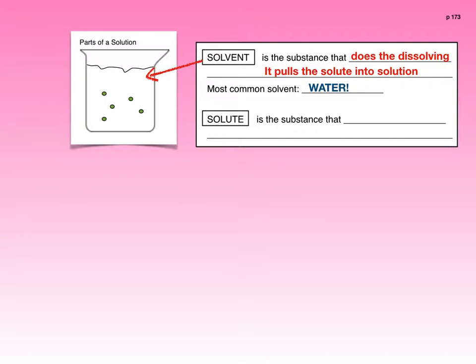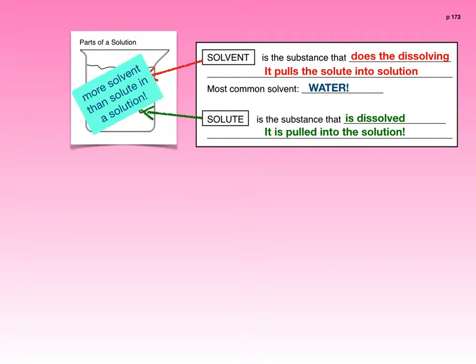What the solvent like water pulls into the solution, we refer to as the solute. So the solute is the substance that is dissolved. The solute is pulled into the solution. If you take a look at the beaker, those little green dots represent the solute and it's being pulled and distributed throughout the solvent. As a general rule, if you look at the proportions of solvent compared to the solute in any typical solution, there tends to be more solvent than solute present.